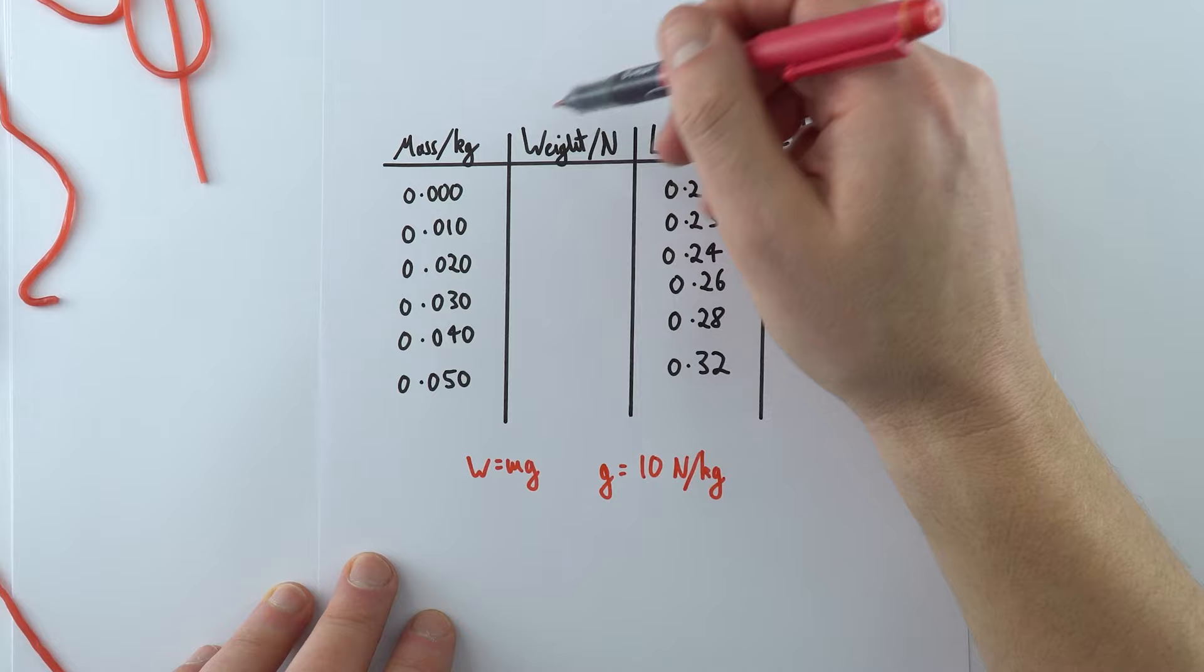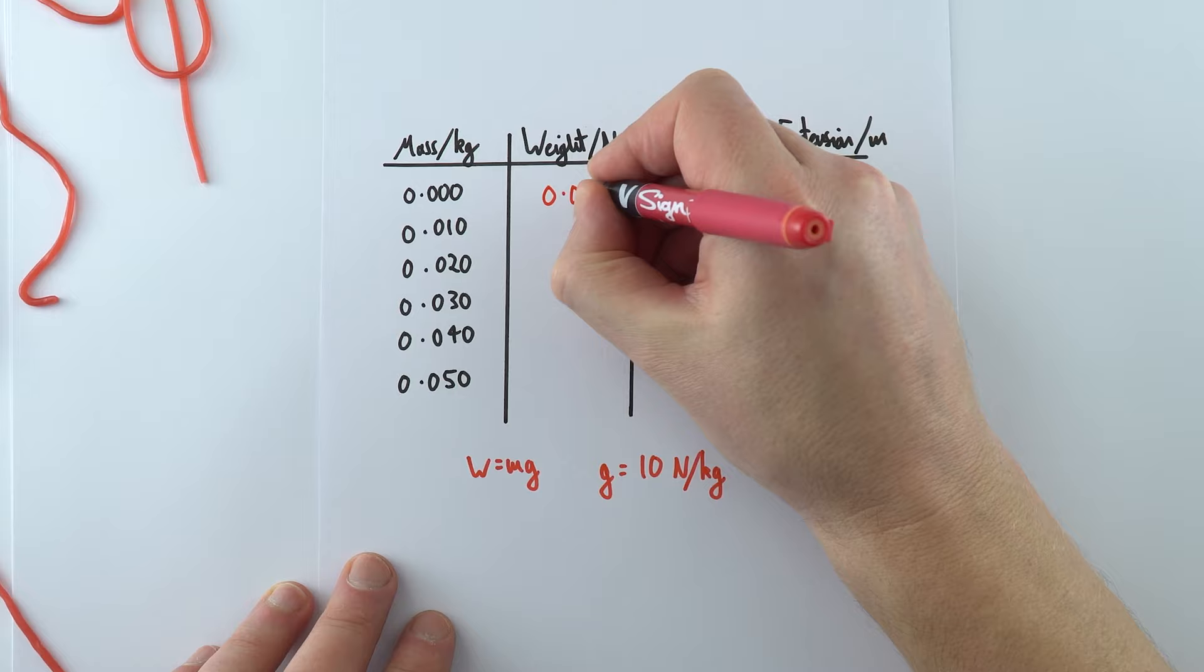So to work out the force applied and the weight, we're going to multiply each of these numbers by 10. So that's going to be 0.00 and then we've got 0.10 and so on.